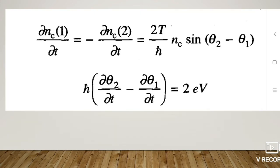These two equations, as obtained earlier, describe the VA characteristics of a Josephson tunneling diode. The first equation is ∂nc(1)/∂t = -∂nc(2)/∂t = (2T/ℏ)nc sin(θ₂ - θ₁).